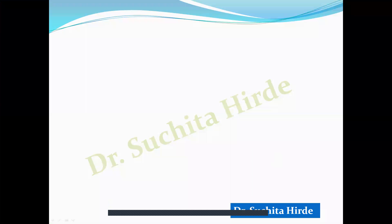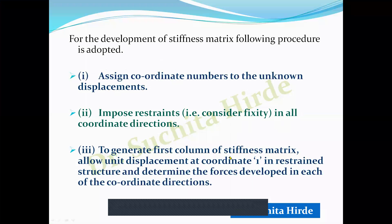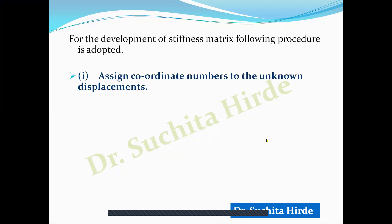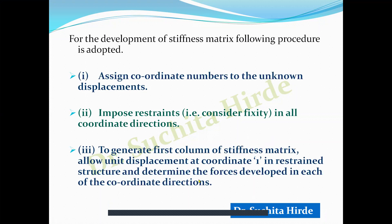Now let us understand the general steps involved in developing the stiffness matrix. First, assign coordinate numbers to the unknown displacements — if thetas are unknown, the coordinates are rotational coordinates. Second, impose restraint in all coordinate directions, meaning consider fixity at all the coordinates. Third, generate the first column of the stiffness matrix by allowing unit displacement at coordinate 1 in the restrained structure and determining the forces developed in each coordinate direction.